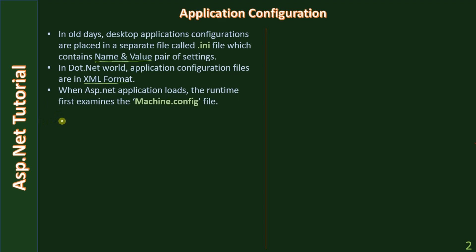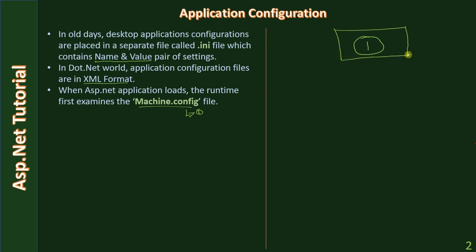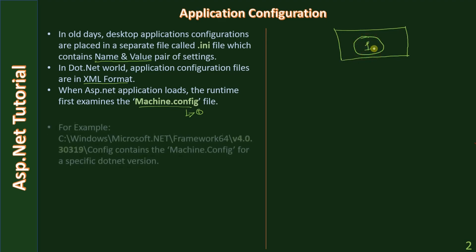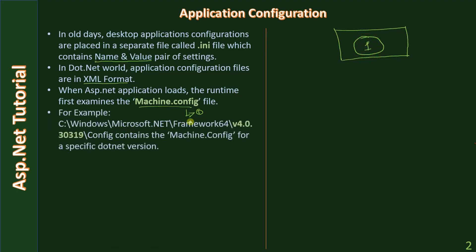When an ASP.NET application loads, the runtime first examines the machine.config file. The machine.config file is the root, and all .NET domain-based applications will check the configuration settings in machine.config. You can locate this file under Windows\Microsoft.NET\Framework.